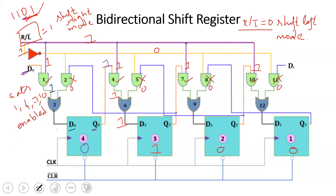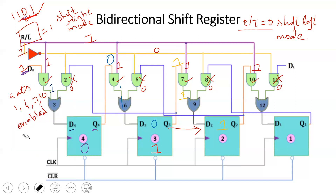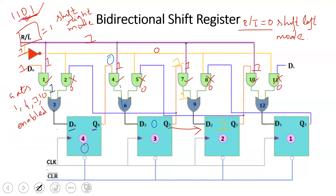At the third clock pulse, DR input is 1. Q3 is 1. Gate 7 output is 1, gate 9 output is 1, so Q3 feeds D2 as shift. Q4 becomes 0, Q3 is 1. D3 is loaded. Next input, 1, is loaded into D4. So now three data bits have been input: 1 (LSB), 0, 1 are loaded.